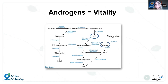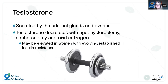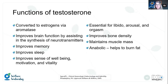Now we'll move into androgens — DHEA and testosterone. Generally, when we think about androgens, we're thinking about vitality. Testosterone is secreted by the adrenal glands and ovaries and decreases with age, as well as following hysterectomy with oophorectomy, and in anyone taking oral estrogen, since oral estrogen increases SHBG, which binds testosterone. Lower SHBG can result in higher levels of testosterone. We will often see testosterone elevated in women who have established or evolving insulin resistance.